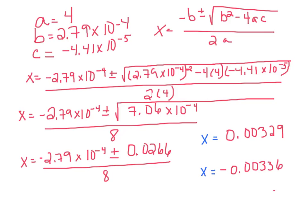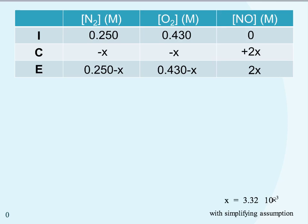Looking at the two x values, we reject x = −0.00336 because subtracting a negative would result in a negative concentration on the product side—we cannot have a negative concentration at equilibrium, so that root is nonsensical. Therefore x = 0.00329 is the correct root. Comparing this to the value obtained with the simplifying assumption (3.32×10⁻³), there is no huge difference—a lot more work for no substantial change in value, because our k is very small.